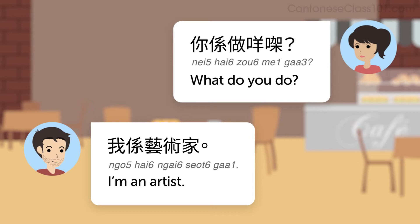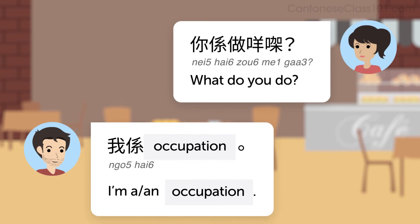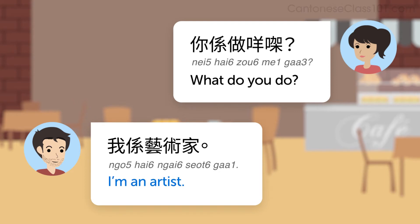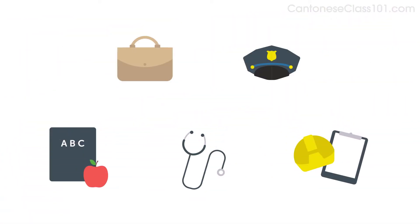This Cantonese sentence literally translates into, You do what? But it means, what do you do, in English. Now, how do you answer this question? This is the pattern you'll need. 我係 Your occupation. I'm a and your occupation. For example, I'm an artist. 我係藝術家.